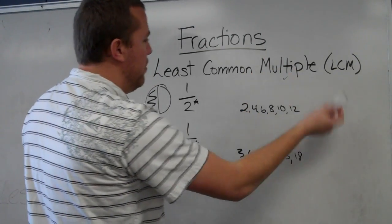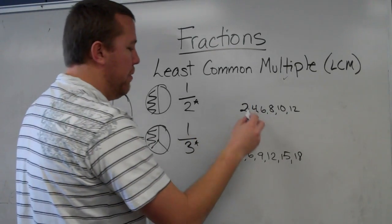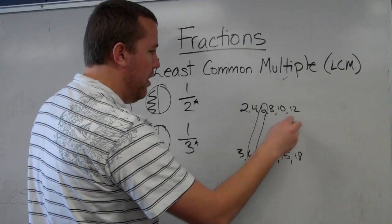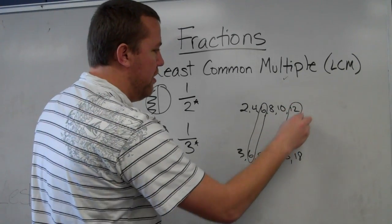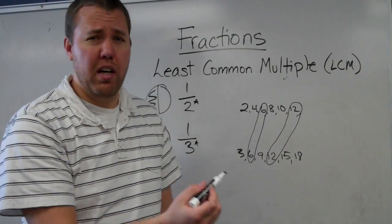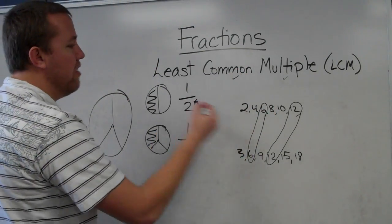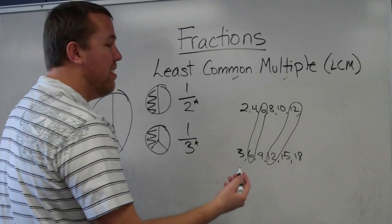Next, find what's common between the lists. Okay, I see that six is common between the lists, and I see that twelve is common between the lists. Once again, it's looking an awful lot like the greatest common factor. But this time, we're looking for the least, or the smallest, and that is six.